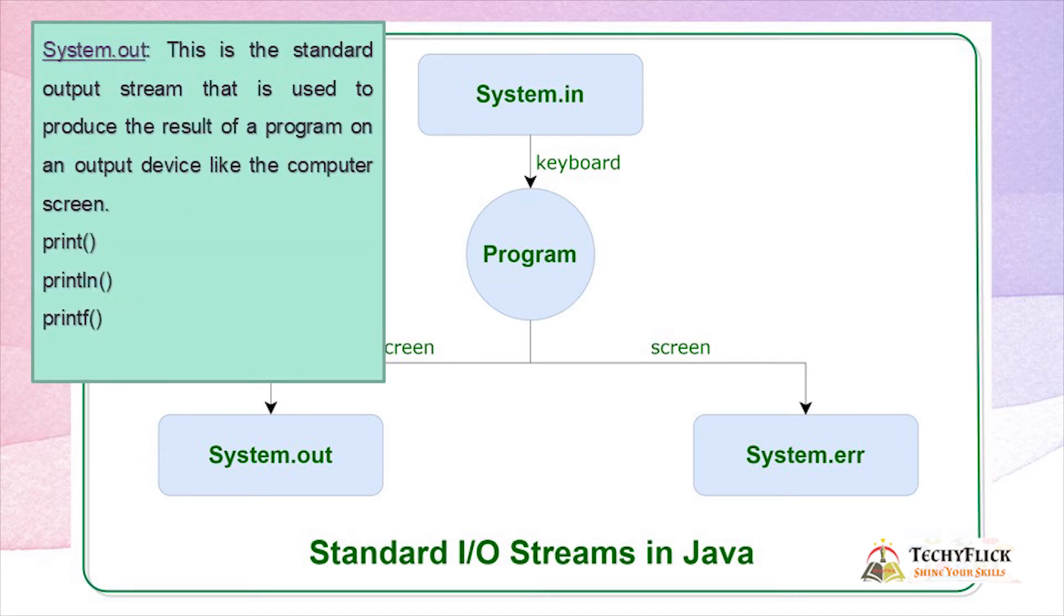System.out: This is the standard output stream that is used to produce the result of a program on an output device like the computer screen. Print, println, printf.